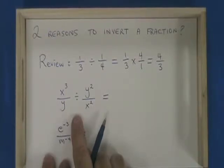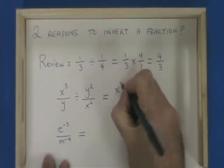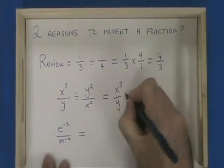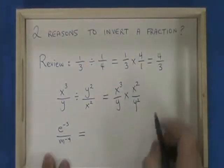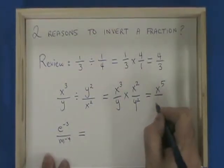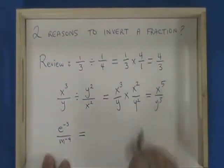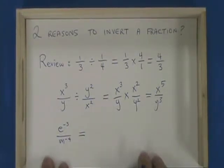x cubed over y divided by y squared over x squared is the same as x cubed over y times x squared over y squared, which gives us x to the power of 5 over y to the power of 3. We have inverted the second fraction because we are dividing fractions. We invert the second fraction, and then we multiply it instead.